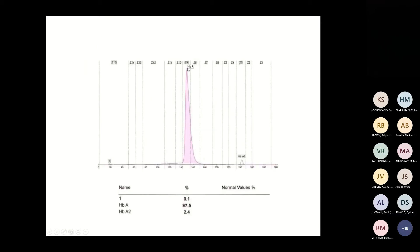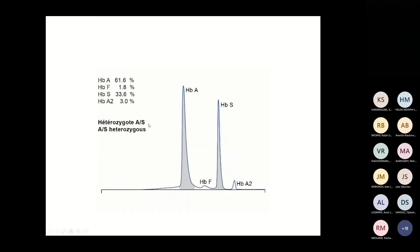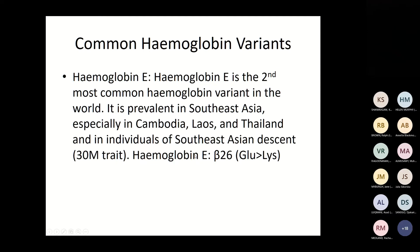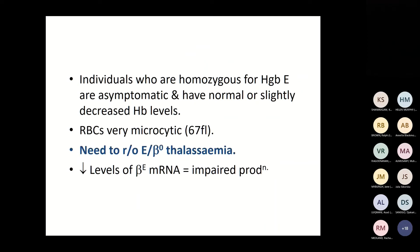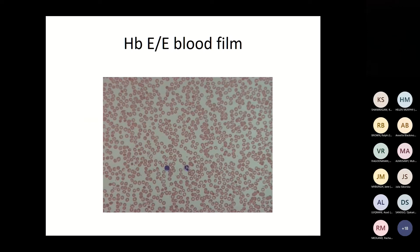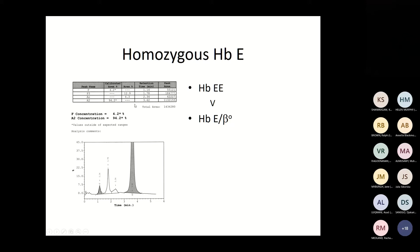On capillary electrophoresis we have an A peak and an A2 peak; for haemoglobin AS we get S and A2 separated. Haemoglobin E is the second most common haemoglobin variant in the world, prevalent in Southeast Asia, especially Cambodia, Laos, and Thailand. Individuals homozygous for haemoglobin E are generally asymptomatic with slightly normal or decreased haemoglobin levels and microcytic red cells, though you must rule out E-beta zero. There is decreased haemoglobin BCE mRNA leading to impaired production. On HPLC alone, homozygous E and haemoglobin E-beta thalassaemia cannot be clearly distinguished.